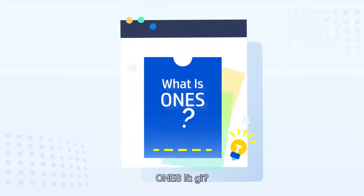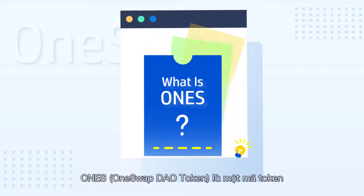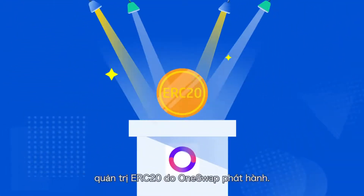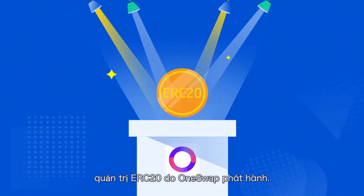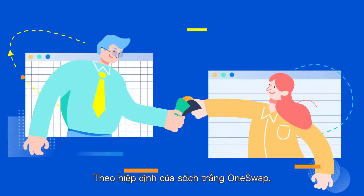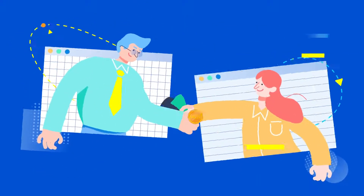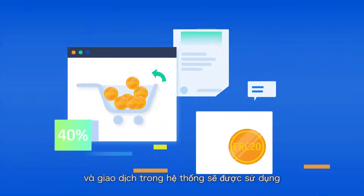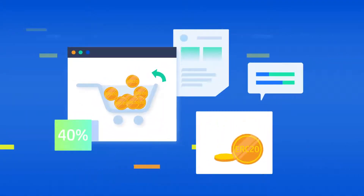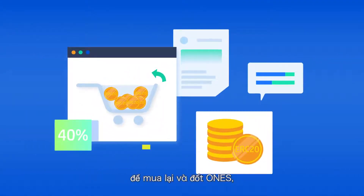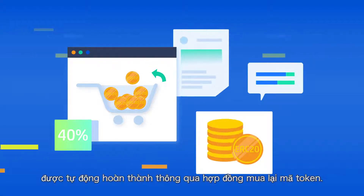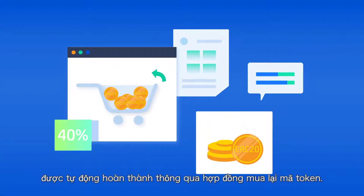OneSwap DAO token is an ERC-20 governance token issued by OneSwap. According to the OneSwap white paper, 40% of the transaction fees obtained through exchange transactions in the system is used for the repurchase and burning of ONES, which is automatically completed through the token repurchase contract.